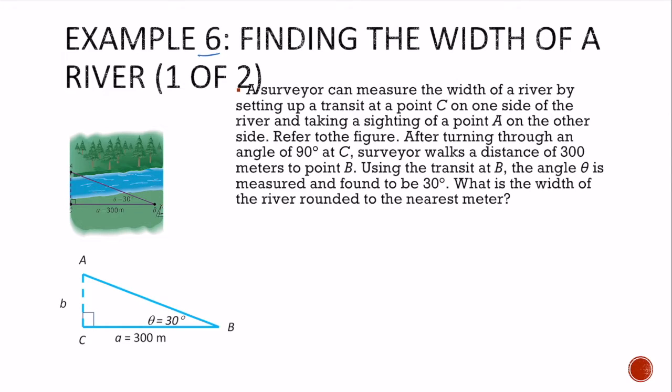Example six, let's take a look at some applications. A surveyor can measure the width of a river by setting up a transit at point C on one side of the river, that's right here, and taking a sighting of point A on the opposite side of the river after turning.